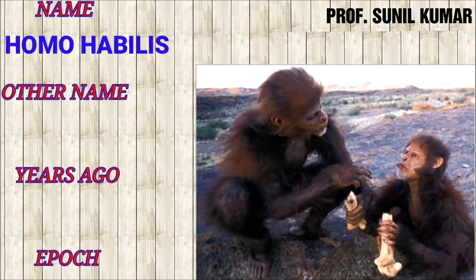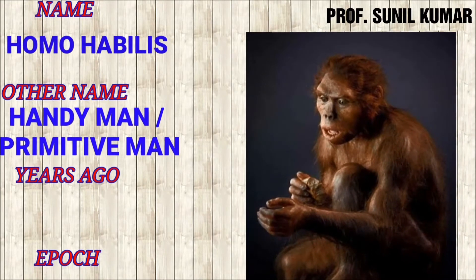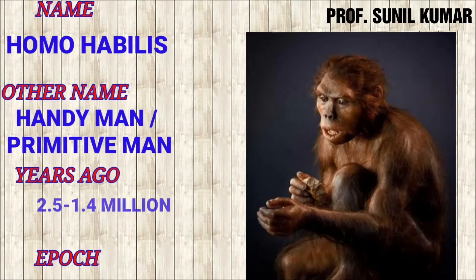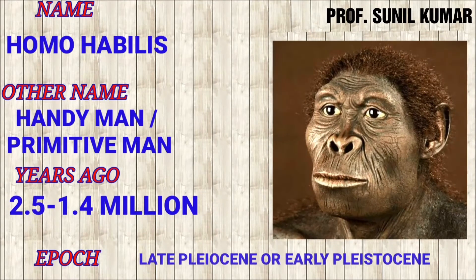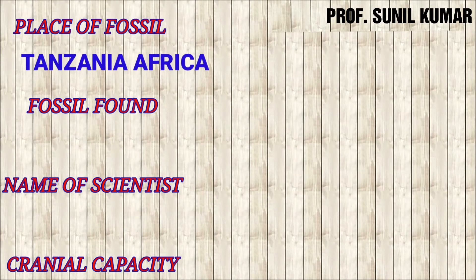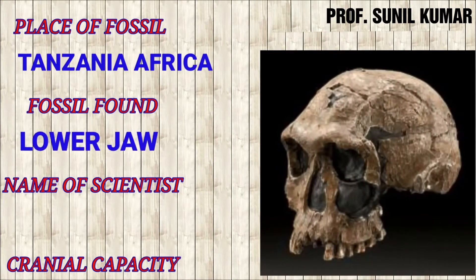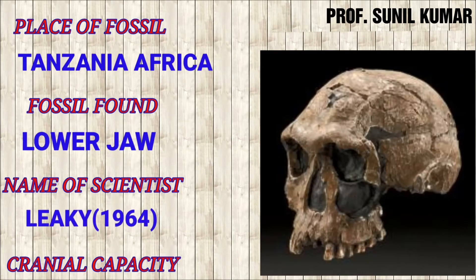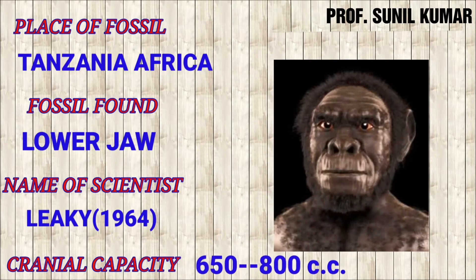Next is Homo habilis, also called Handyman — the primitive man who started using hands. They had an opposable thumb, hence the name Homo habilis. They lived 2.5 to 1.4 million years ago in the late Pliocene or early Pleistocene epoch. The fossil was found in Tanzania, Africa, and the fossil found was the lower jaw. The scientist who discovered it was Leakey in 1964.